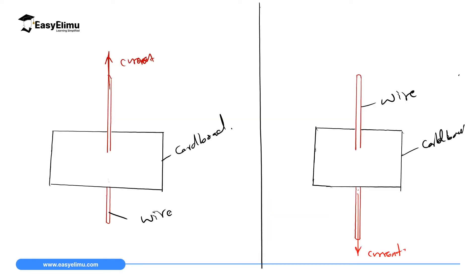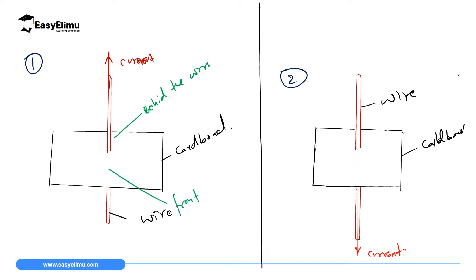Our first example: we are going to determine the direction of magnetic field along a wire which is cutting through the cardboard from down upward, so current is moving from down up along that wire. We have two sections of this cardboard. On one side is behind the wire, and on the other side is the front part of the wire.